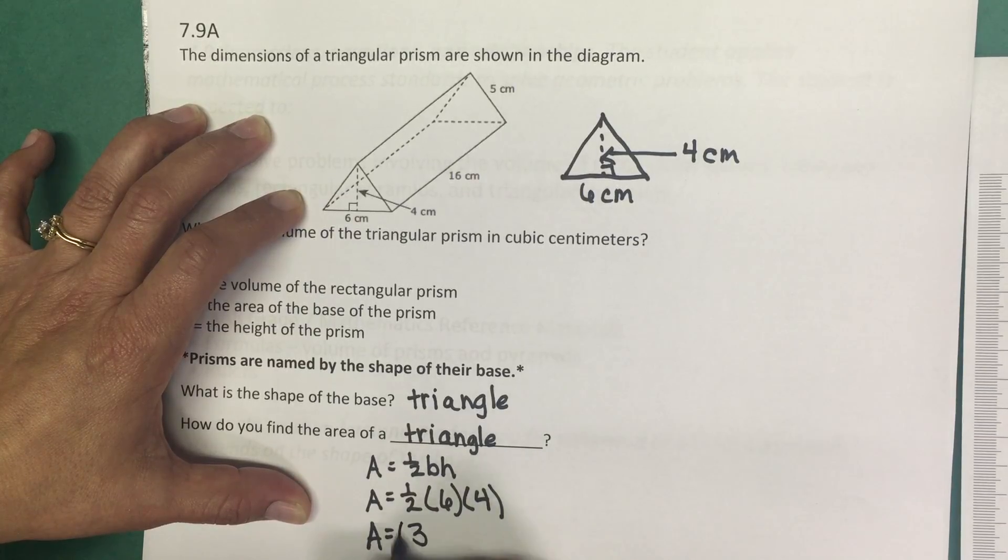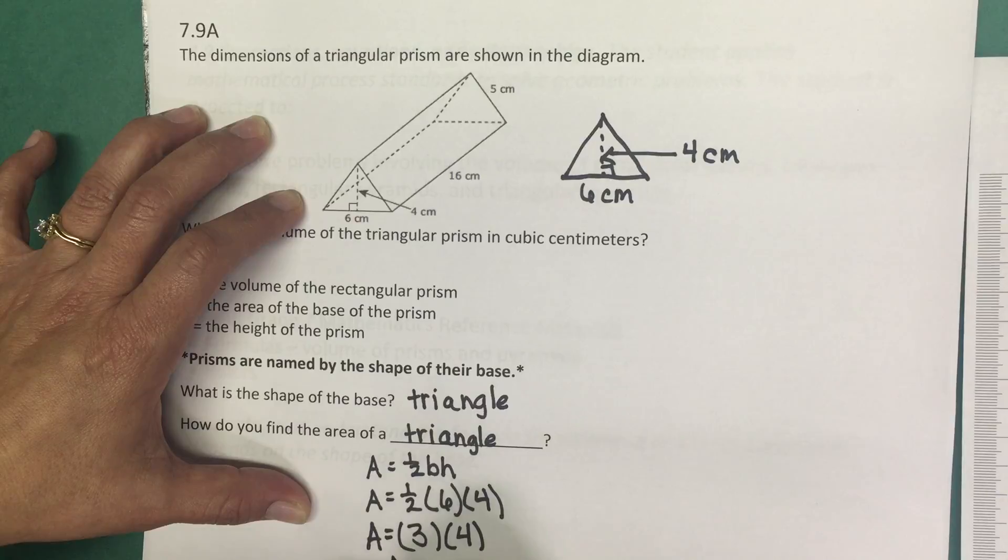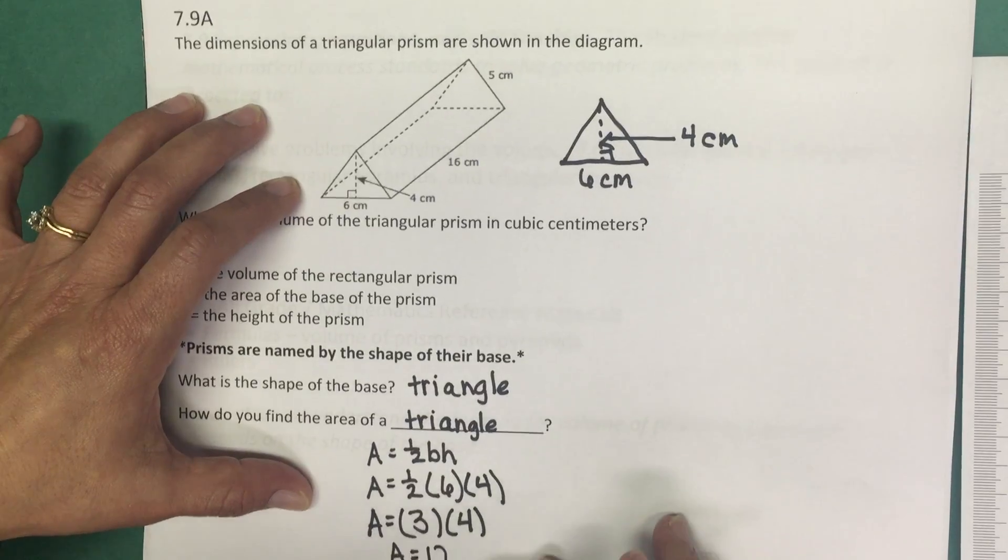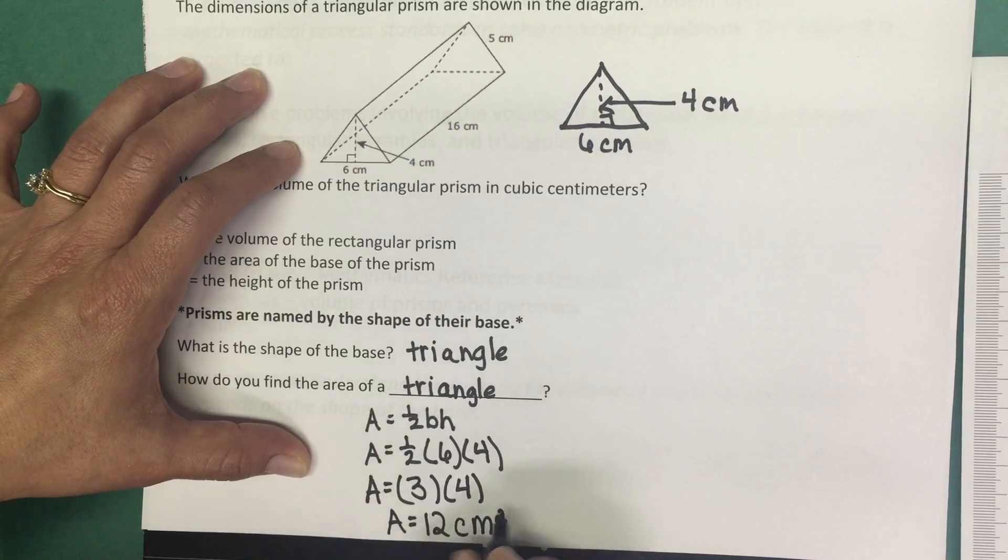One half times six is three. We still have times four. Three times four will give us an area of 12 centimeters squared.